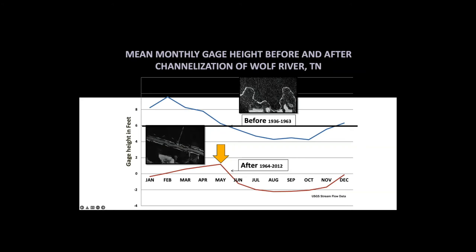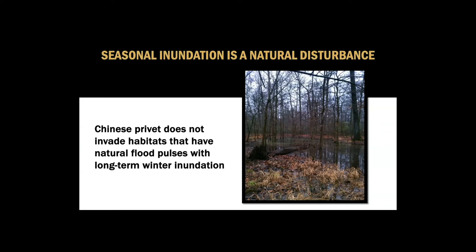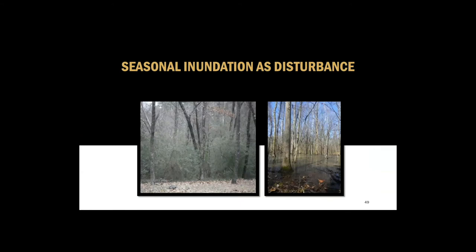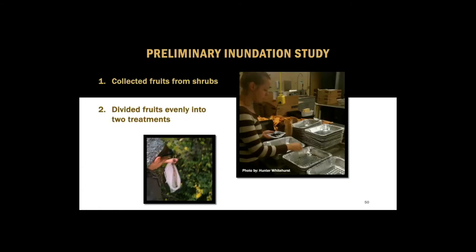Chinese privet does not invade habitats that have natural flood pulses with long-term winter inundation. I'll now explain how the prevention of natural disturbances of flood pulsing has facilitated the invasion of Chinese privet in hydrologically altered bottomland hardwood forests. Seasonal inundation is a disturbance — this natural flood pulsing resulting in long-term winter inundation reduces the ability for Chinese privet to establish. I wanted to test this experimentally, and I did — I couldn't just rely on the observations I made in nature.